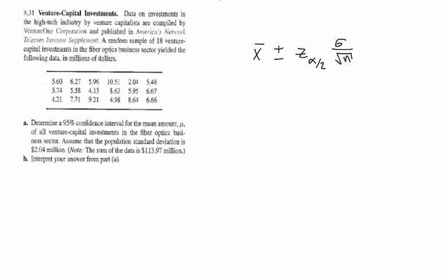Now I want to go through the problem and highlight all the important information. They didn't exactly tell us x bar but they told us that the sum of all the data is 113.97 million. So we're going to take that number and divide it by 18. So n was equal to 18. The sum of our xi's was equal to 113.97 so x bar is equal to 113.97 divided by 18 which is equal to 6.332.